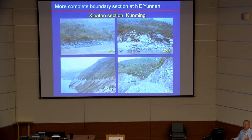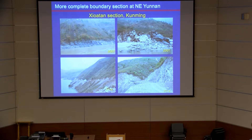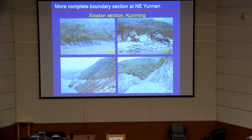The major section cannot be the GSSP because it has a gap. Over the past twenty years we have been looking for new sections in Yunnan and northeastern Yunnan, where more expanded and complete sections exist. We found a 2007 section along the upstream Yangtze River with a nice exposure of the boundary interval. However, that section is now flooded by a reservoir — the second biggest dam in China was built just below it. Fortunately, a new road-cut section exactly repeats the original section, and the boundary interval is well exposed there.